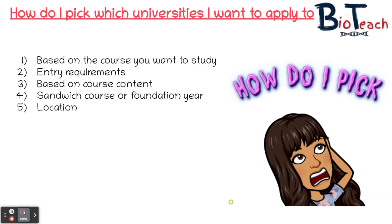You may also apply to universities based on their location. Consider how far you're willing to travel to uni if you're planning on staying at home, or if you're moving out, whether the location is appropriate for you. You might find a university you want to apply for but it may be too far from family or friends, which makes it less suitable. Think about what's important to you, as this might help you decide which university you're going to apply to.